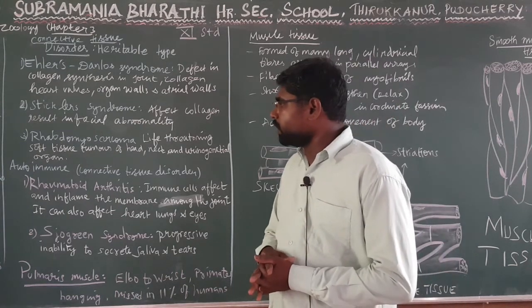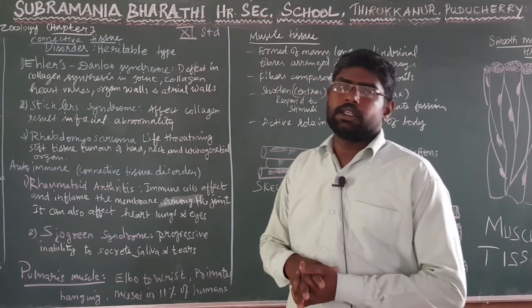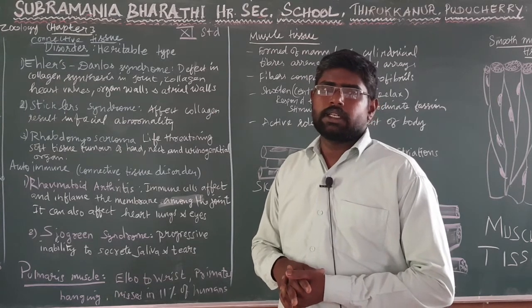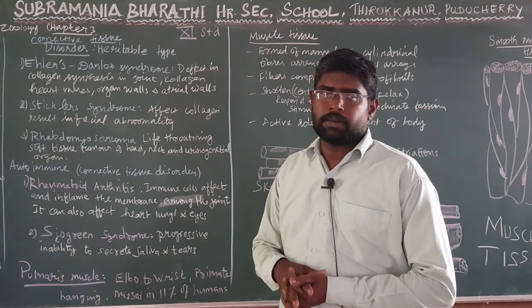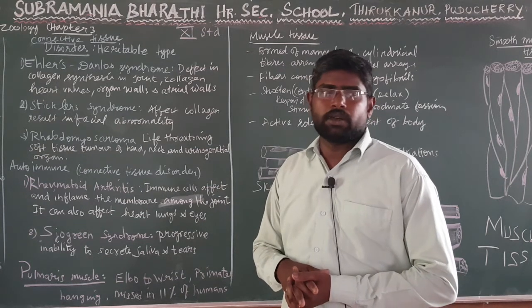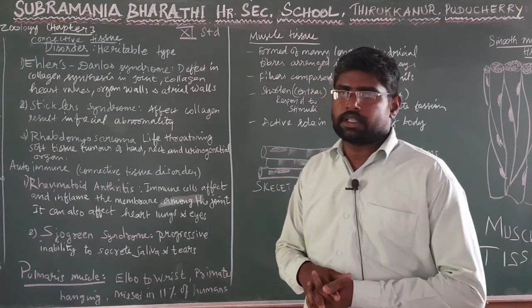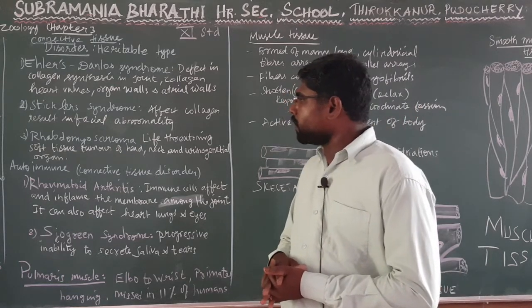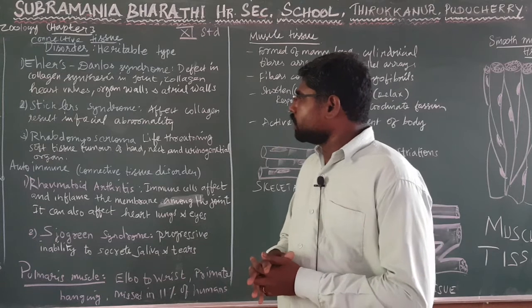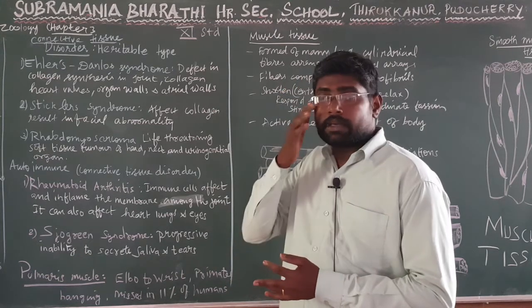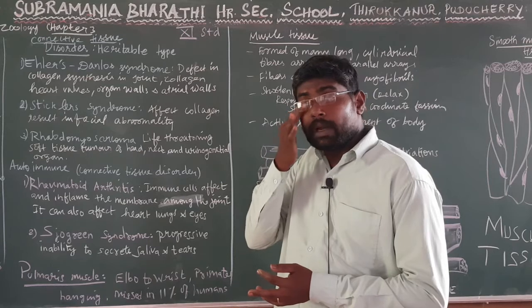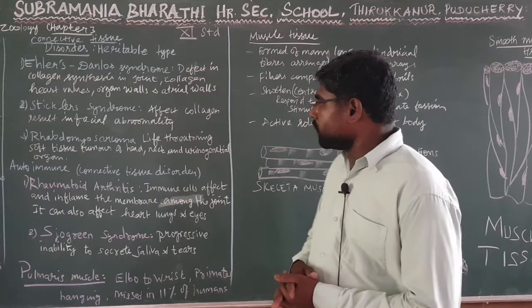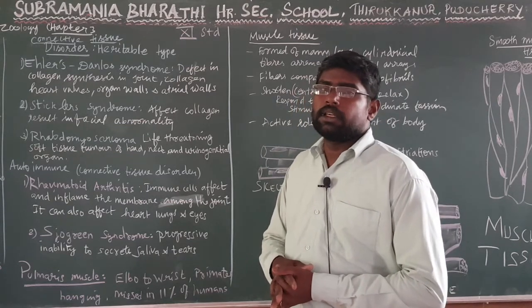Another category is autoimmune disease. In our connective tissue problems, we can have rheumatoid arthritis or gout.